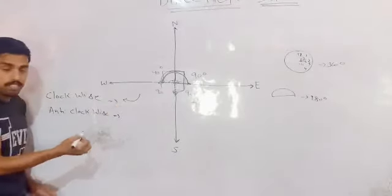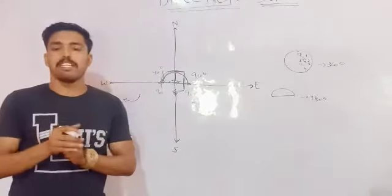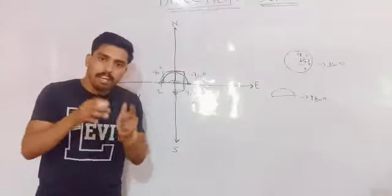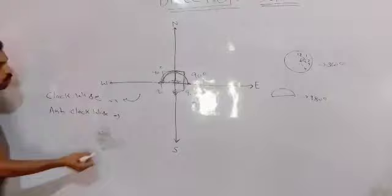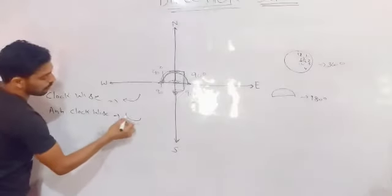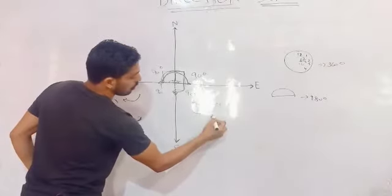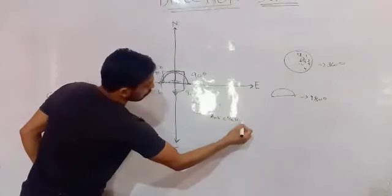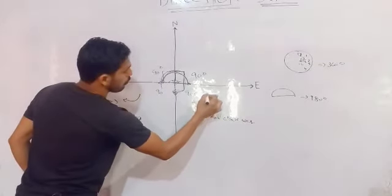Clockwise direction and anti-clockwise means the opposite direction of the clock. The opposite direction of the clock is your anti-clockwise direction. And this is clockwise.